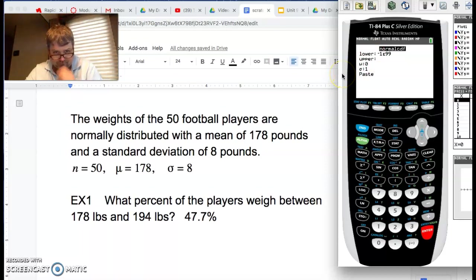So lower bound is always left on the curve, the number line. As reading left or right, it's always left, upper bound is always right.